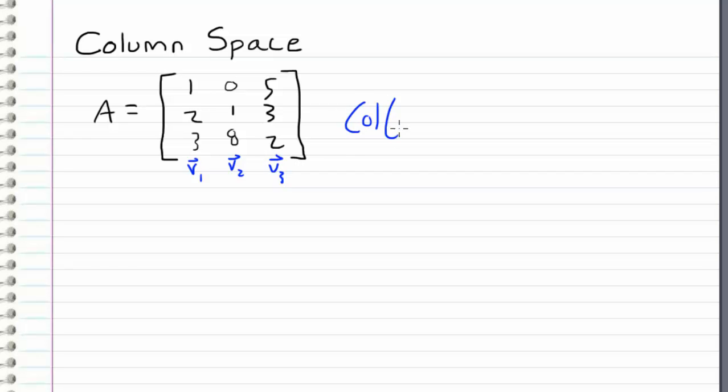And then as I said previously, we take the column space of our matrix to be the span of the vectors that are the columns of our matrix. So V1, V2, and V3.